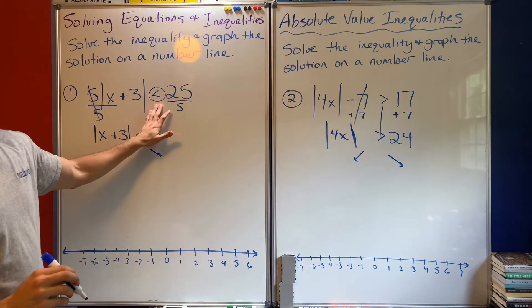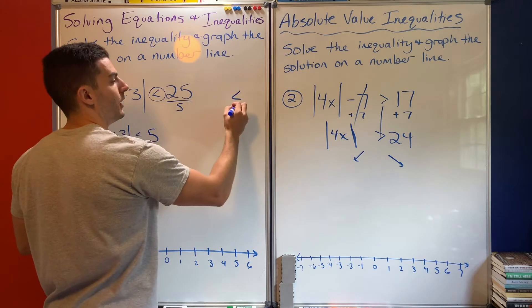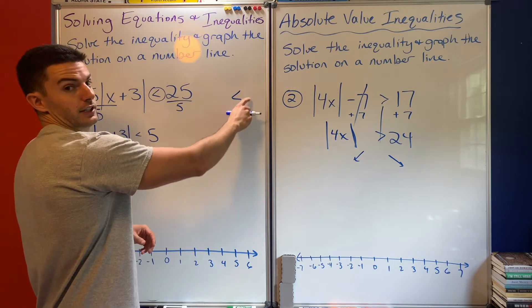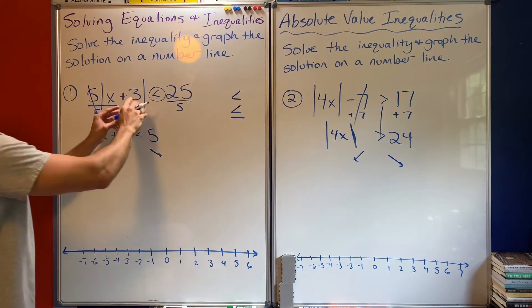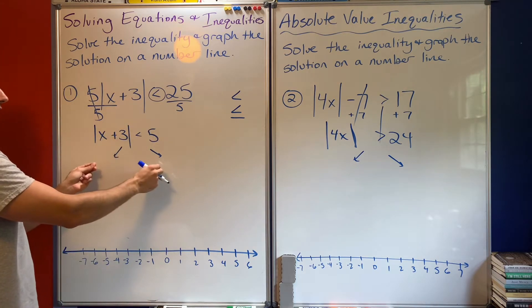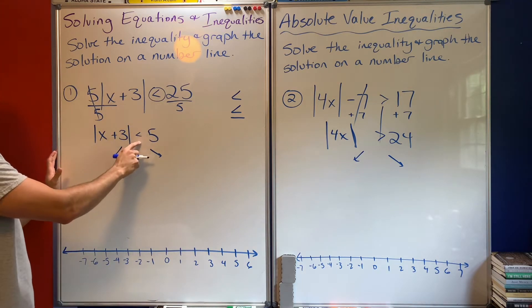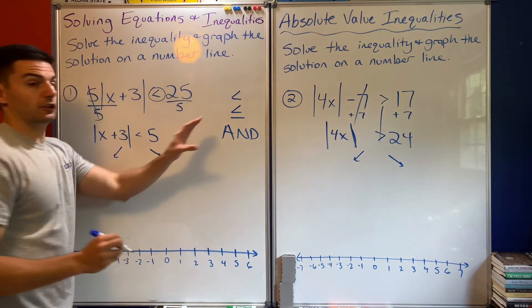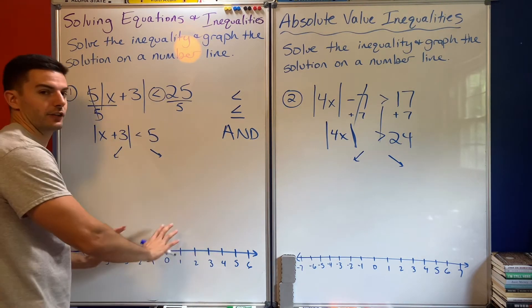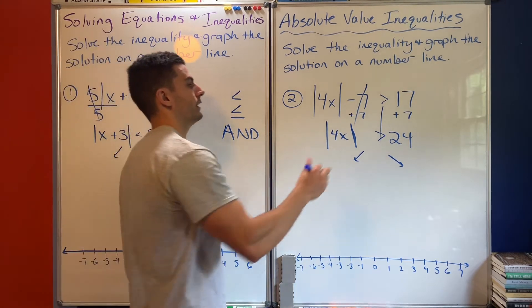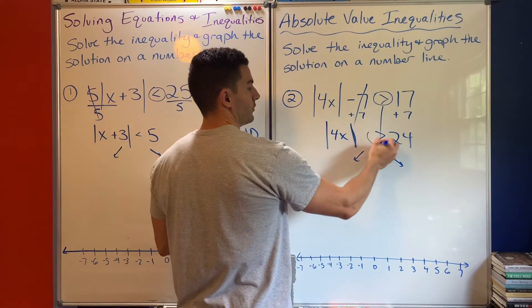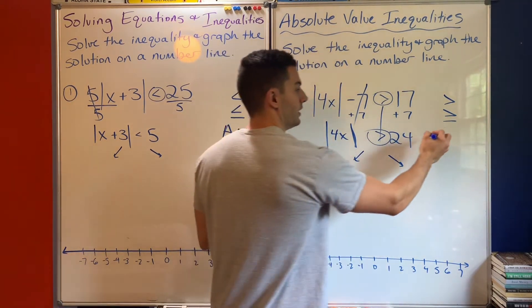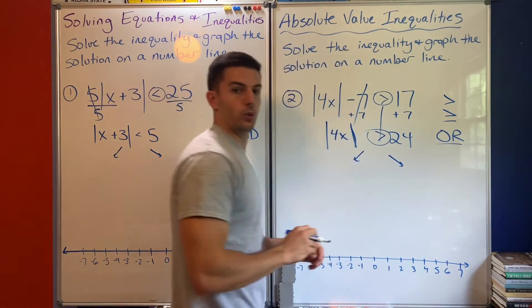This inequality sign is a less than — and less than or equal to follows the same rule. If it's either of these when you go to split it, that would be an 'and' solution. Then this other one is a greater than, so when you go to split it and it's greater than or greater than or equal to, that's going to be an 'or' solution.